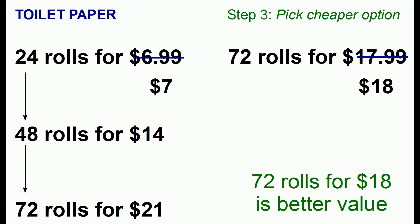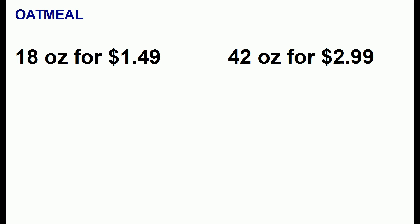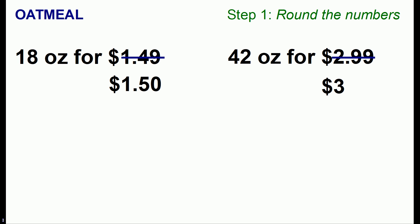So in this case 72 rolls for $18 is better than 24 rolls for $7. Let's do another example. Let's say you're shopping for oatmeal and one container has 18 ounces for $1.49 and another package has 42 ounces for $2.99. Which package offers the better value? We'll go through our three-step process. We'll first round the numbers to an even amount because that will be good enough for estimation purposes.